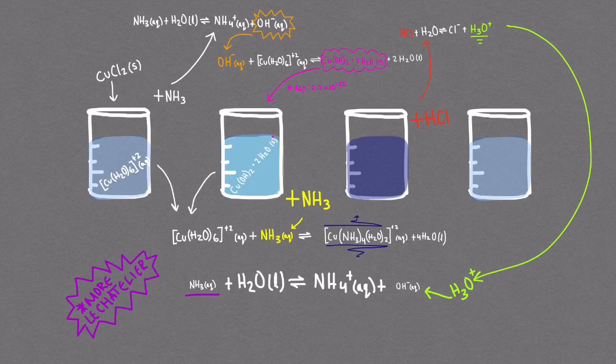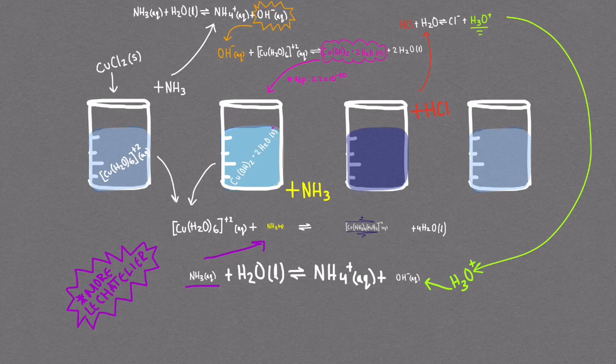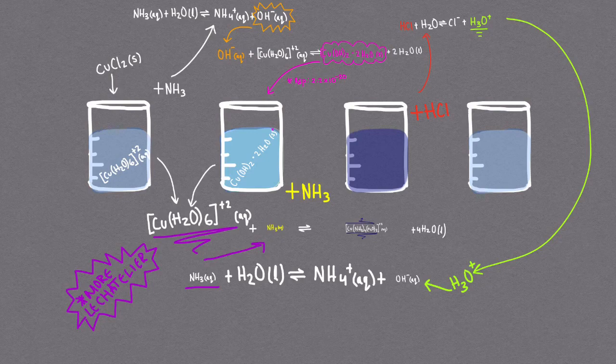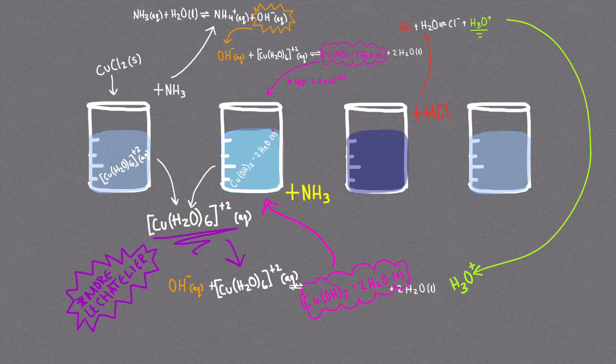As the NH3 is consumed the excess that allowed the dark blue copper ammonia complex to form disappears causing the reaction to respond by dissociating the copper ammonia complex back into the original copper ions and NH3. Eventually as the copper ion concentration goes up the copper ammonia complex will disappear completely. This allows the formation of the copper hydroxide precipitate to occur again reverting the solution back to a cloudy blue.